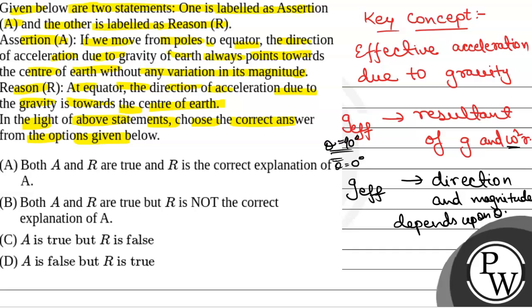So here in assertion we have been given, if we move from poles to equator, the direction of acceleration due to gravity always points towards the centre of earth without any variation in its magnitude. This is false, since the direction of acceleration due to gravity and magnitude of acceleration due to gravity depends on theta.